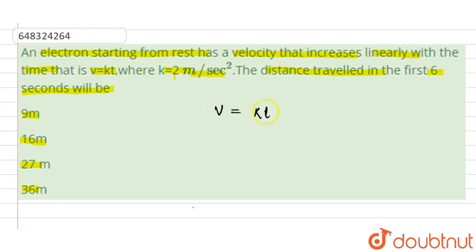From here, we can find the acceleration. Acceleration is the rate of change of velocity, so a = dv/dt. Since k is constant, we get a = k. Here k is given as 2 m/s², so acceleration is 2 m/s².